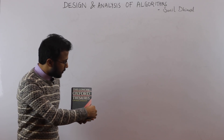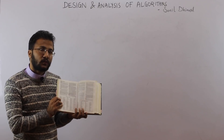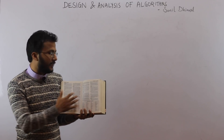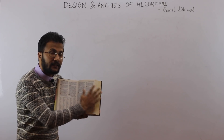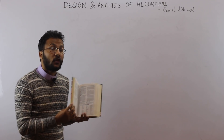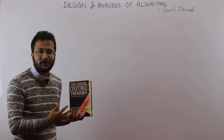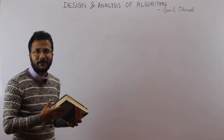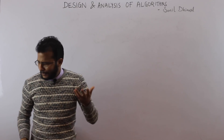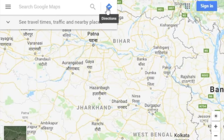With binary search, we flip the dictionary at the middle and check whether our word is on the left-hand side or the right-hand side. That is binary search. So all of you have already used binary search in your life — you are using an algorithm. You are also all using Google Maps.